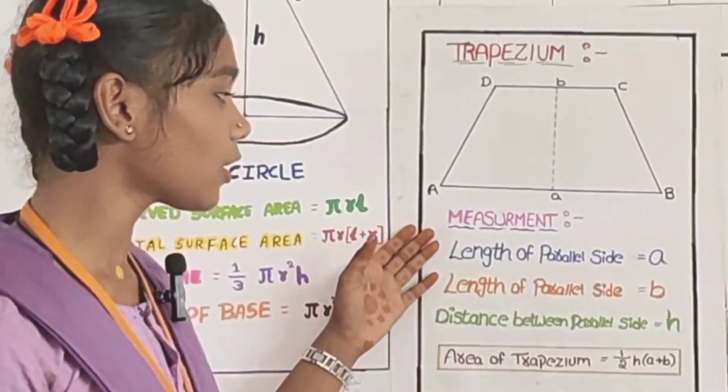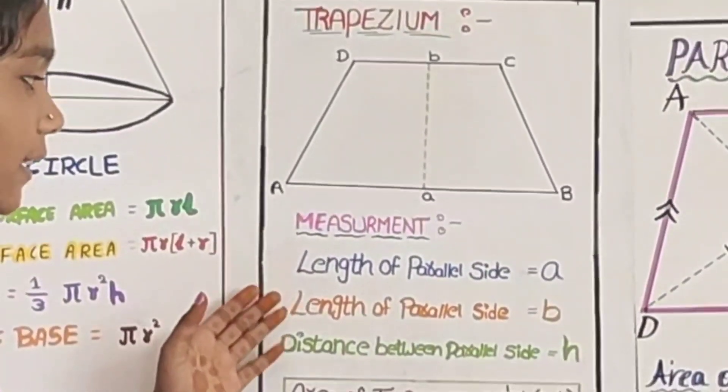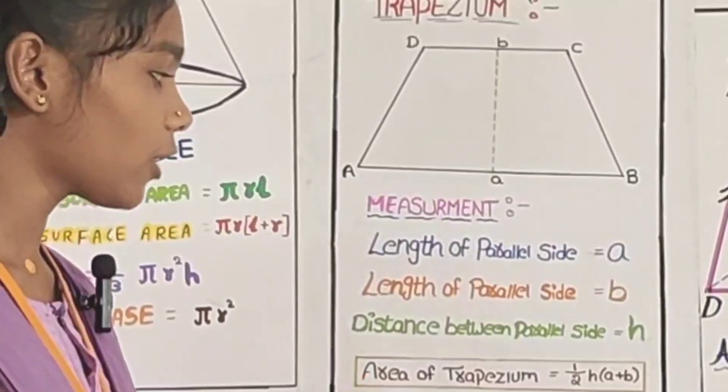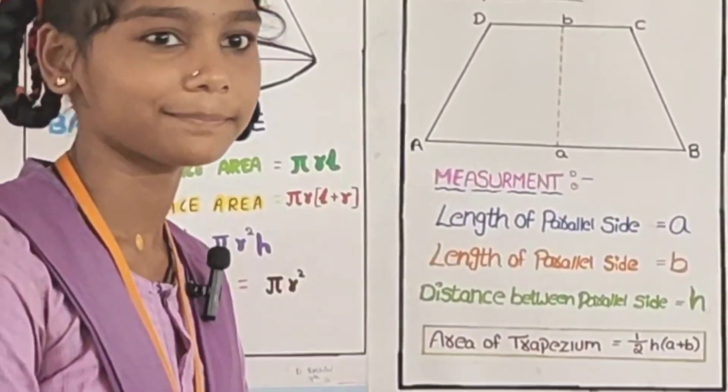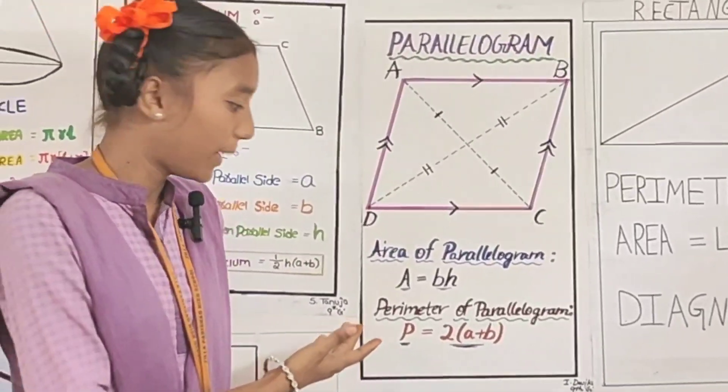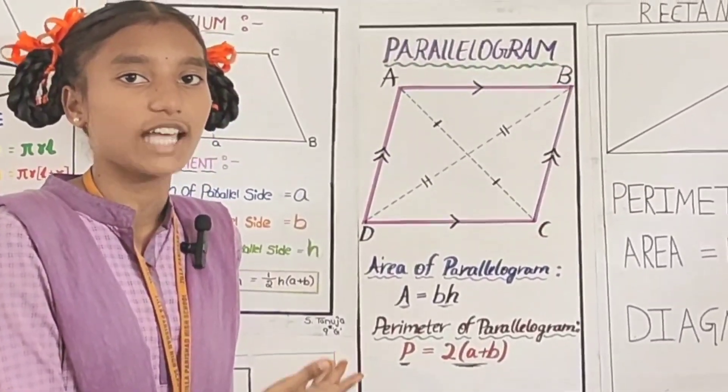This is a trapezium. Measurement of trapezium: length of parallel side A, length of parallel side B, distance between parallel sides H. Area of trapezium equals half into H into A plus B. This is parallelogram. Area of parallelogram is base into height. Perimeter of parallelogram is 2 into side plus B.